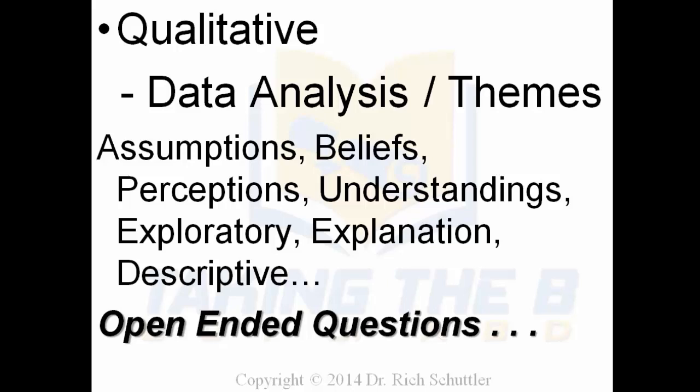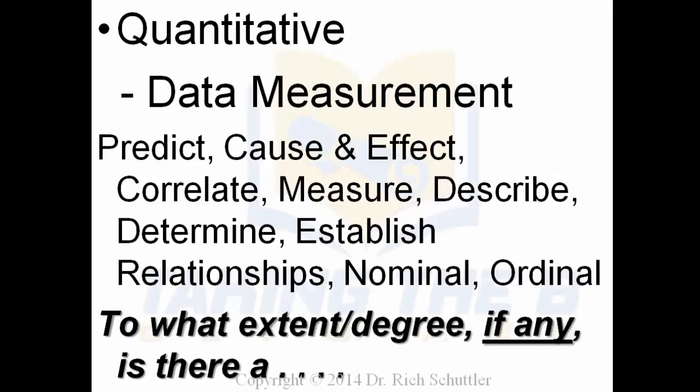I'll give you some examples. In qualitative research, you're processing data in the aspect of analysis and looking at themes. Some of the words you'll see with qualitative research are related to assumptions, beliefs, perceptions, understandings, and exploratory type of research – explanations or descriptive types of findings produced by people being interviewed or observed. In many cases you see this through open-ended questions. As compared to quantitative, where it's more about measuring data, and words commonly used include predict, cause and effect, correlate, measure, describe, determine, establish relationships, and nominal or ordinal types of data.